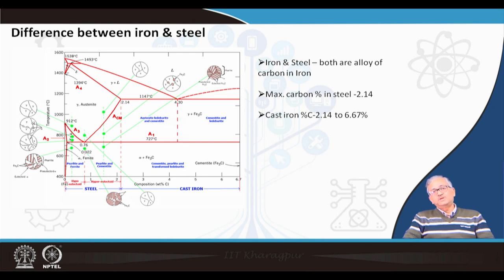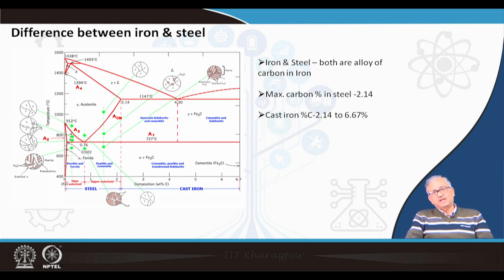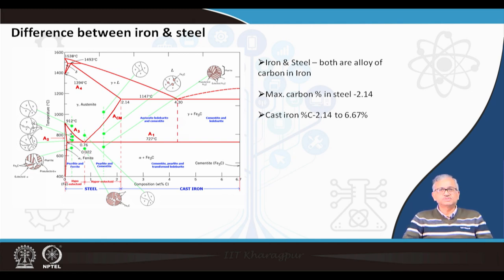Because of brittleness, the formability of cast iron decreases. You cannot form it by conventional deformation routes like forging — it becomes very difficult because it is brittle and will break during forming. However, cast iron has very good castability, especially when impurities like silicon are present. That is why they are called cast iron — you can easily cast it.